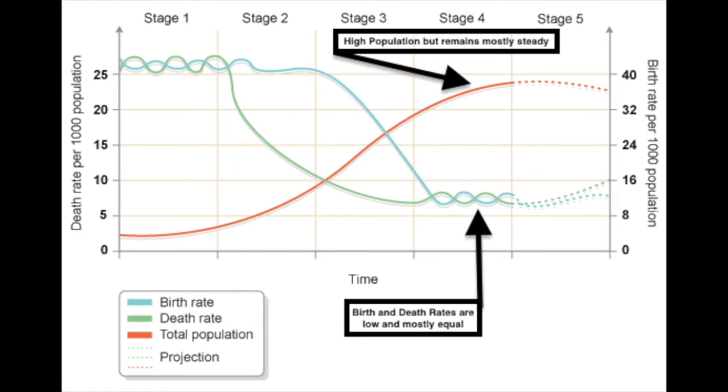Stage four is called the low growth stage, also seen as the zero population growth stage. We typically see the total fertility rate at 2.0 to 2.1. Women are entering the workforce and pursuing educational goals. Entertainment is more readily available as incomes increase, and people are not settling down and having families right away. Birth control is also a major factor as it becomes cheaper and more available in more developed countries. The key factor behind stage four is that we see low to no growth.